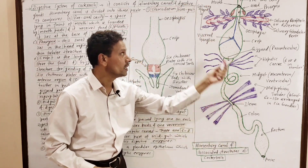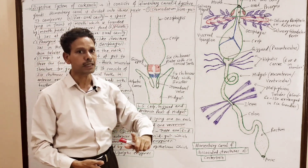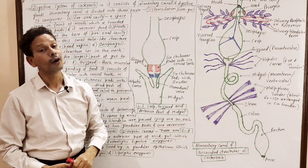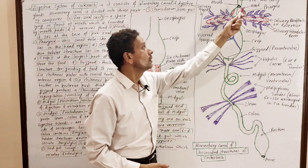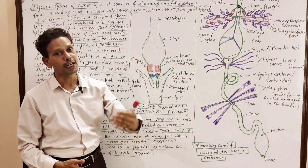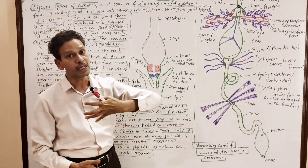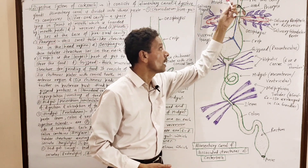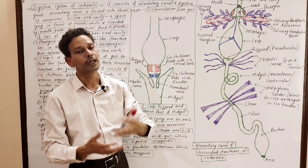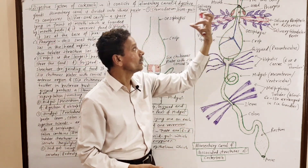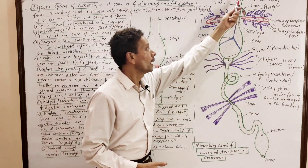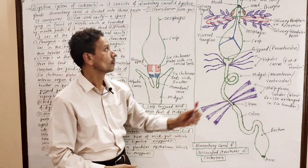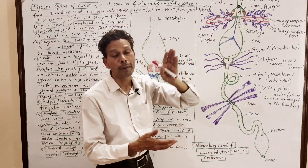The entire alimentary canal is divided into three parts. First, I will discuss the foregut, or stomodeum. The foregut is divided into the following parts. The first part is the preoral cavity. As the name indicates, the preoral cavity is the cavity that lies in front of the mouth. This preoral cavity is surrounded by different parts of the mouth, and it receives food particles. It leads into an aperture — the second part of the alimentary canal — which is the mouth. The mouth lies at the bottom or base of the preoral cavity.